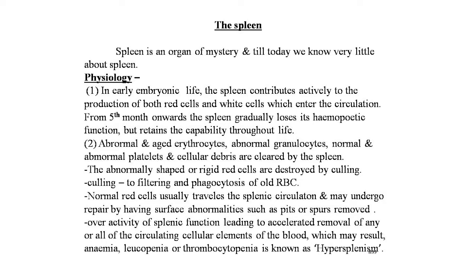Normal red cells travel the splenic circulation and may undergo repair by having surface abnormalities such as pits and spurs removed. Overactivity of splenic function leading to accelerated removal of any or all circulating cellular blood elements — which may result in anemia, leukopenia, or thrombocytopenia — is known as hypersplenism.